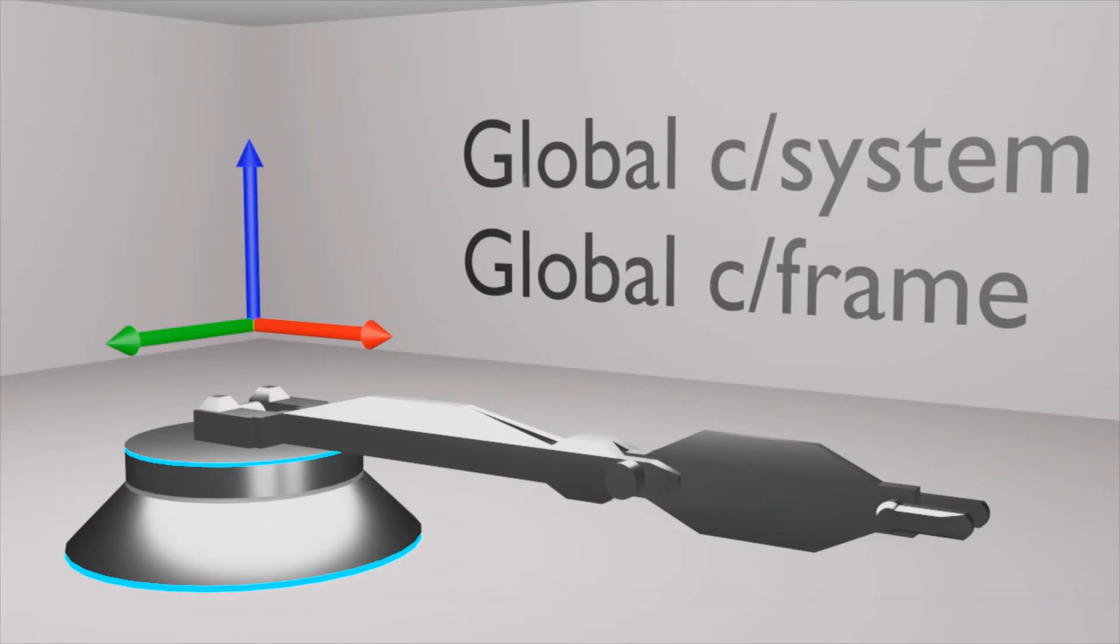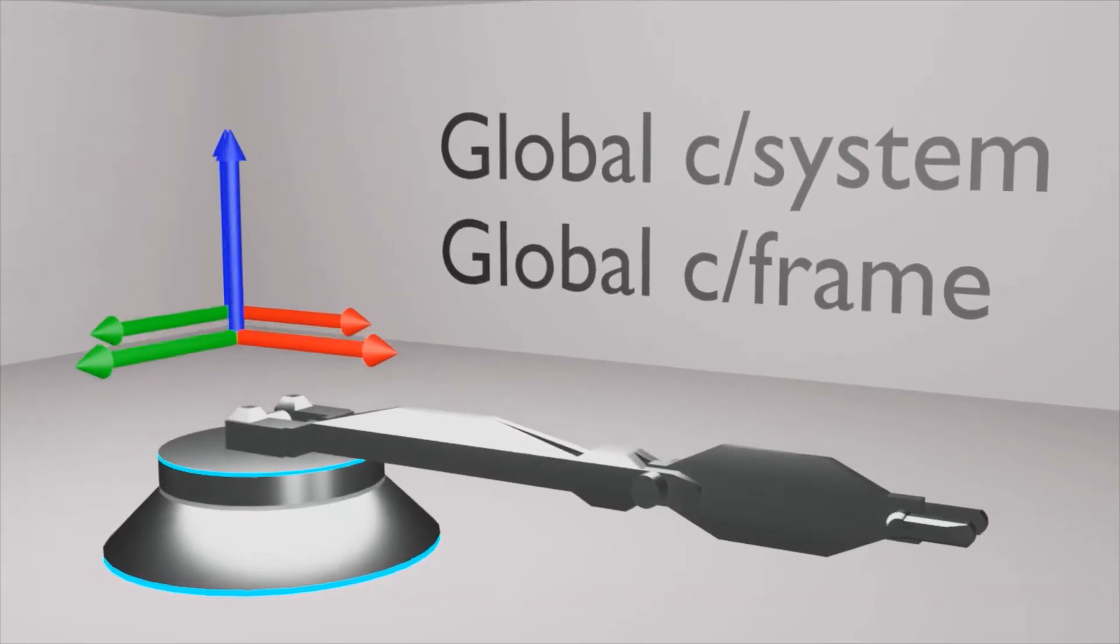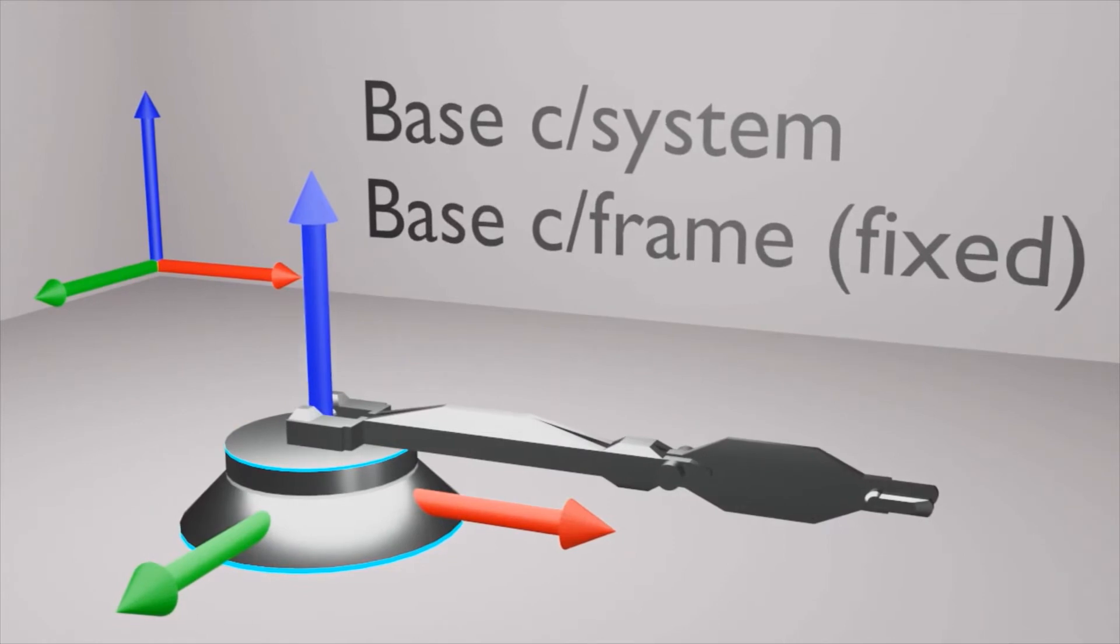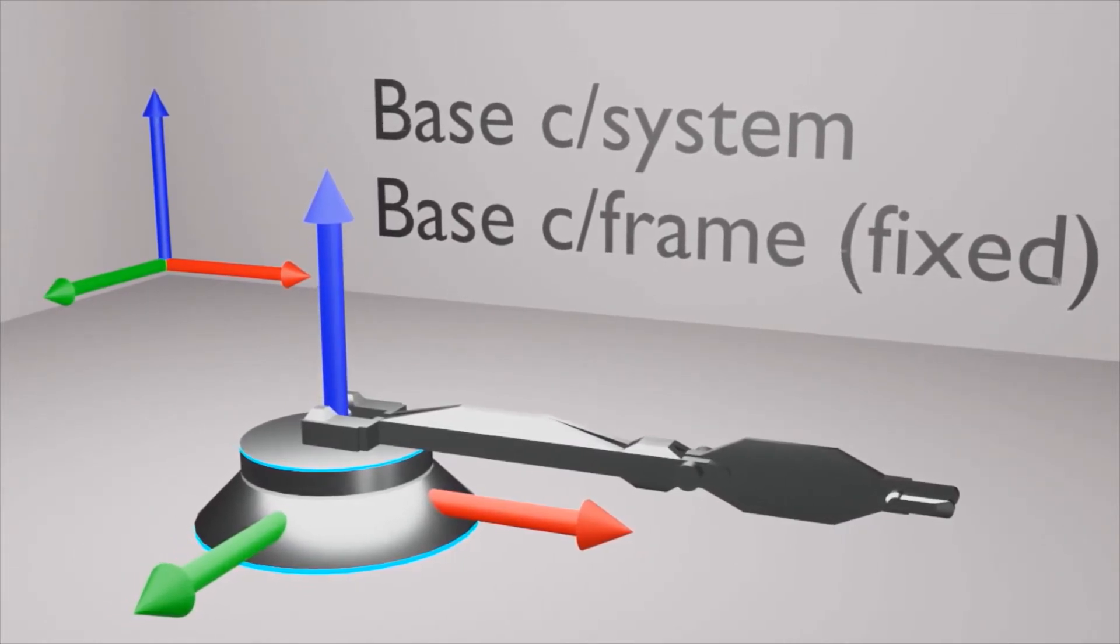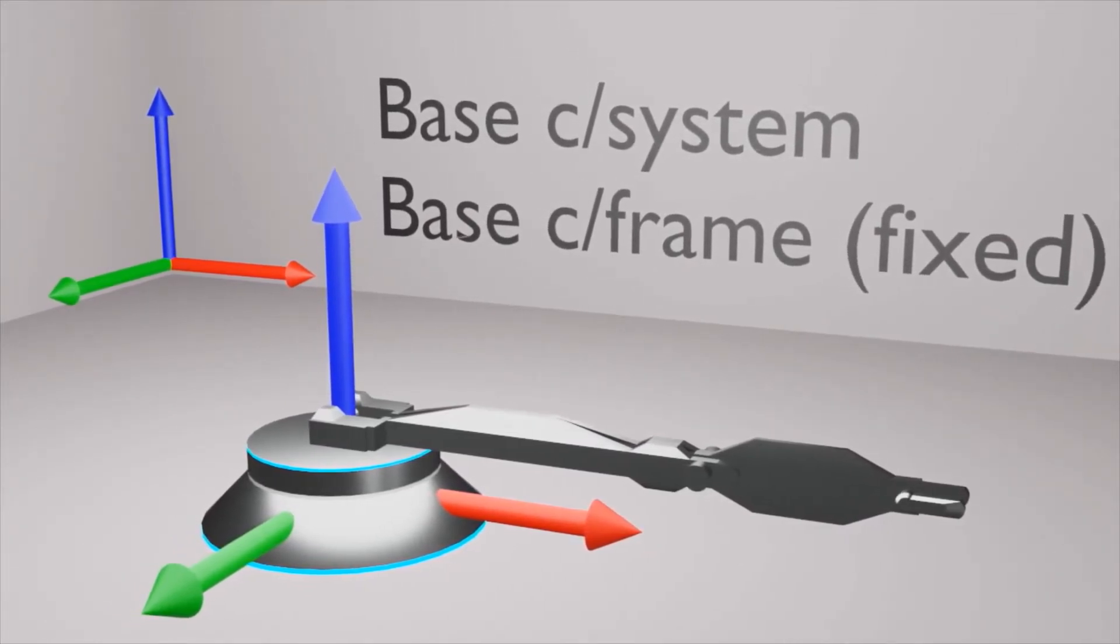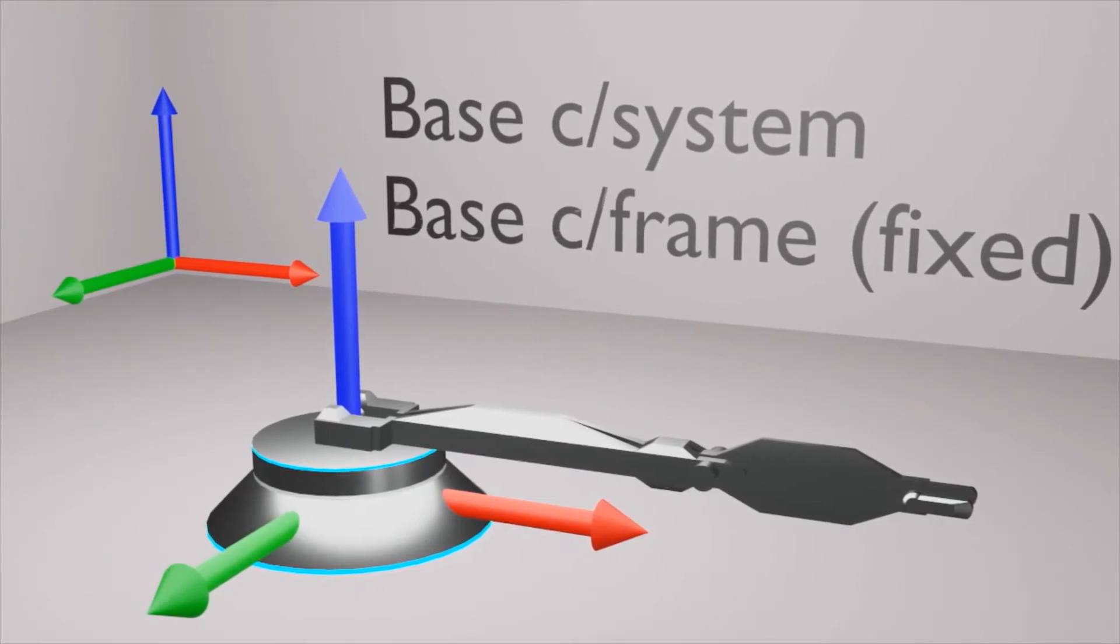The base of this robot has a coordinate system called as base coordinate system also called as base coordinate frame. Since the base is fixed to the floor it is also called as fixed coordinate frame.